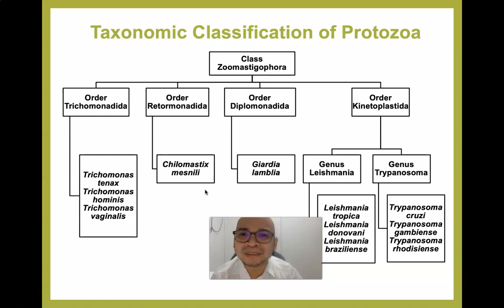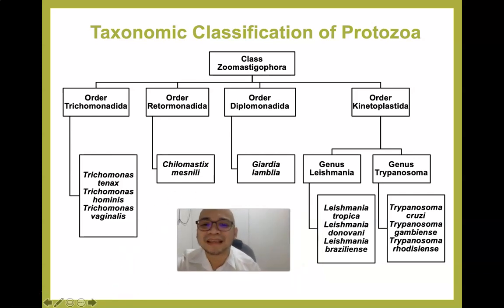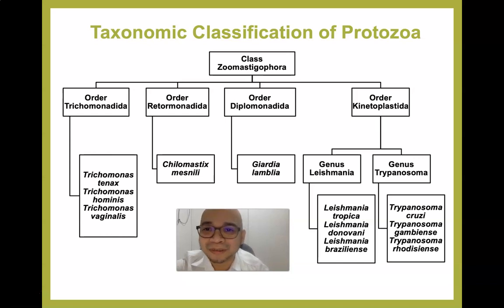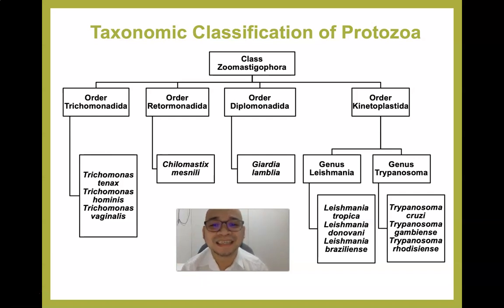Under class Zoomastigophora we have the order Trichomonadida, which includes Trichomonas tenax, Trichomonas hominis, and Trichomonas vaginalis. Tenax is found in the oral cavity, hominis is found in the intestine, and vaginalis is found mostly in female reproductive organs. Trichomonas vaginalis is the only species of Trichomonas that is sexually transmitted. Under order Retortamonadida we have Chilomastix mesnili, known as the lemon cyst.